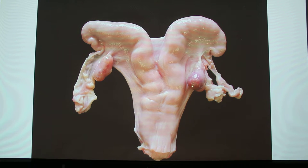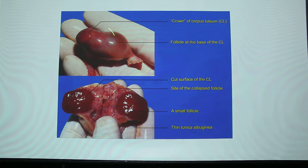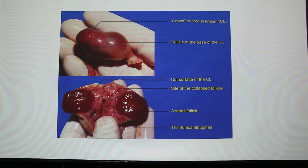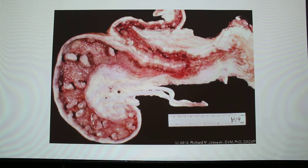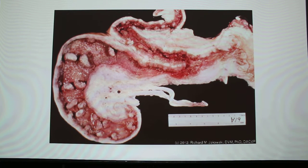Before puberty you would never find a CL — finding a CL is actually the definition of when a cow reaches puberty. Here's a big red structure — that's the corpus luteum, what makes progesterone and promotes normal pregnancy. Here's an ovary cut in half — they tend to be reddish and can get yellowish. On the inner surface of the uterus you'll always find little bumps, and every bump is a place where the placenta attaches.